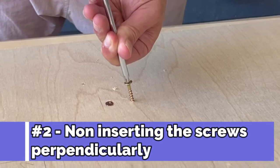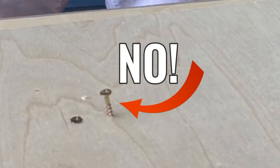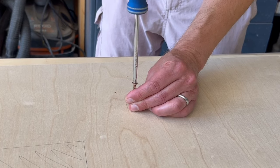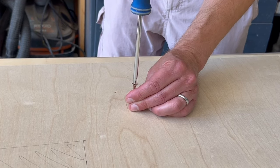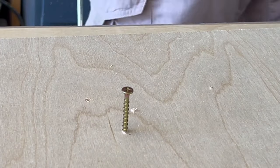This takes us to the second most common mistake: not inserting the screw perfectly perpendicular. To avoid ending up with a crooked screw, use two fingers to hold the screw straight and then push down using perfect downward pressure. Do this and you'll have a perfectly straight screw.